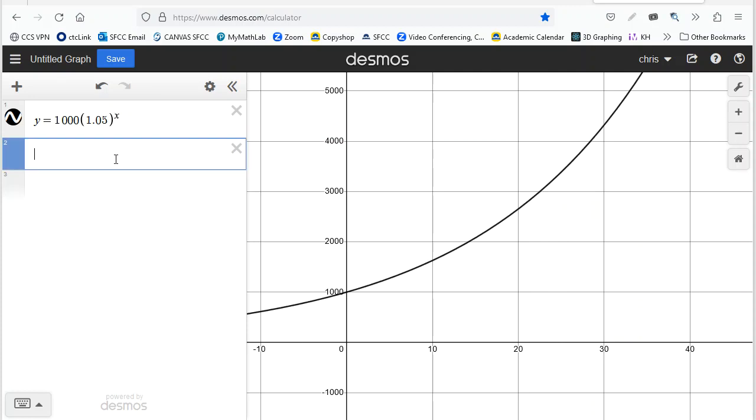We wanted to know how long it would take for the investment to double. So that would be $2,000. So we wanna know when is my output or when is my Y value $2,000. So what we're gonna type in on the next line is Y equals 2,000. And this is the line when it equals $2,000. And notice a point popped up here where my curve that represents my growth of my money is equal to 2,000. I click on that dot and I get a point.